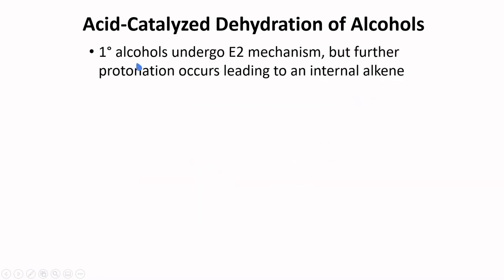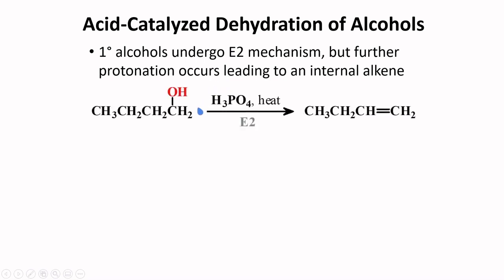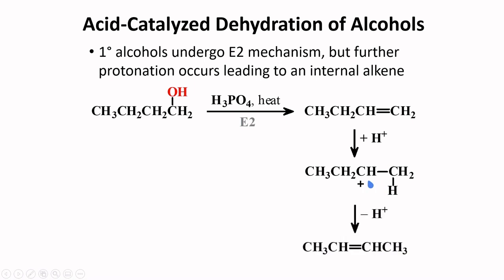The dehydration of primary alcohols works via the E2 mechanism, but further protonation occurs leading to an internal alkene. An example is the dehydration of 1-butanol. In the presence of phosphoric acid, 1-butanol may initially form a terminal alkene; however, because of the acidic condition, protonation of this alkene will occur to form a secondary carbocation, and the prevailing condition will enable deprotonation to form the internal alkene. Thus, the mechanism for acid-catalyzed dehydration of primary alcohols is far more complicated.